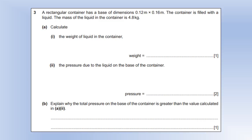So we've got a regular container with base dimensions of 12 centimeters and 16 centimeters. The container is filled with a liquid. The mass of the liquid is 4.8 kilograms. Calculate the weight of the liquid. So to turn mass into a weight, we need to multiply by gravitational field strength, which on Earth is 10. So we're going to get 48 newtons as a force.